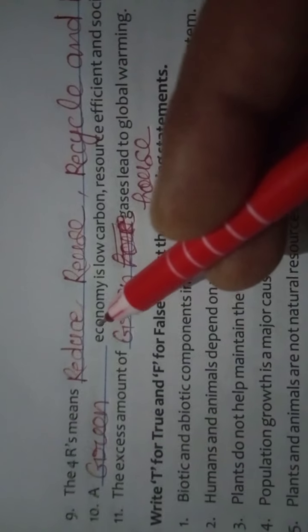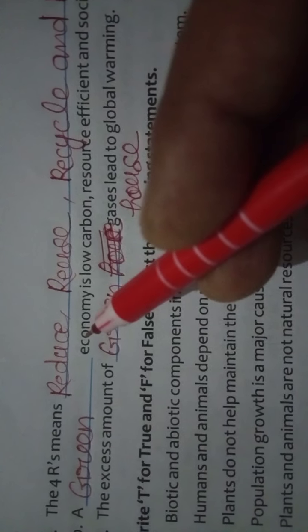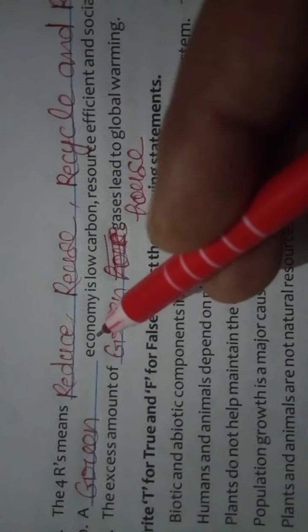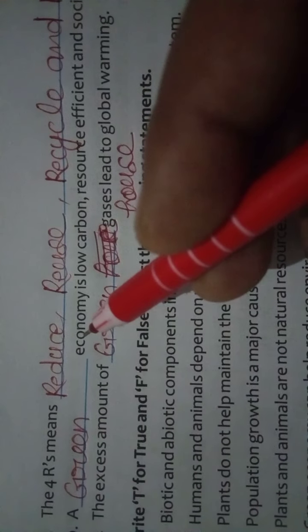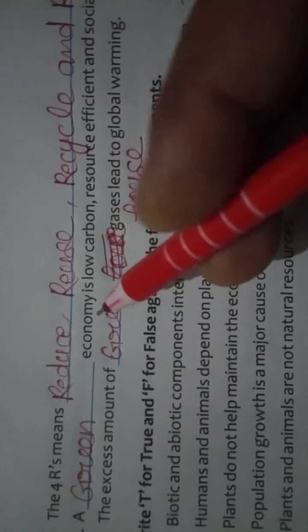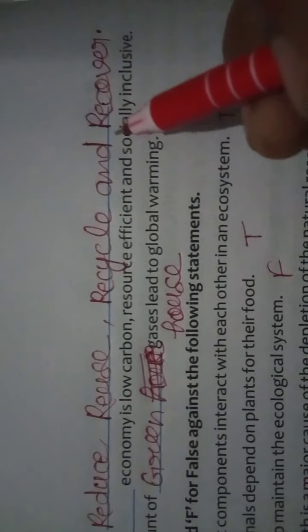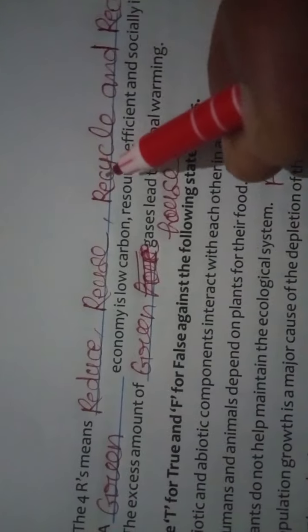The 4 R's mean: Reduce, Reuse, Recycle, and Recover. These four are environment and ecology related terms used for sustainable resource management.